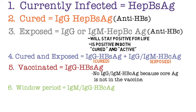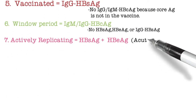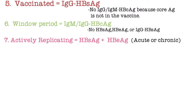Number six — window period equals IgM or IgG hepatitis B core antigen only; there is no HBs antigen, HBE antigen, or IgG hepatitis B surface antigen. The IgM hepatitis B core antibody has suppressed HBE and HBs levels, which is good — it gives us a fighting chance. Number seven — actively replicating equals hepatitis B surface antigen plus hepatitis B E antigen; if you see those two together, that indicates active replication, either acute or chronic.